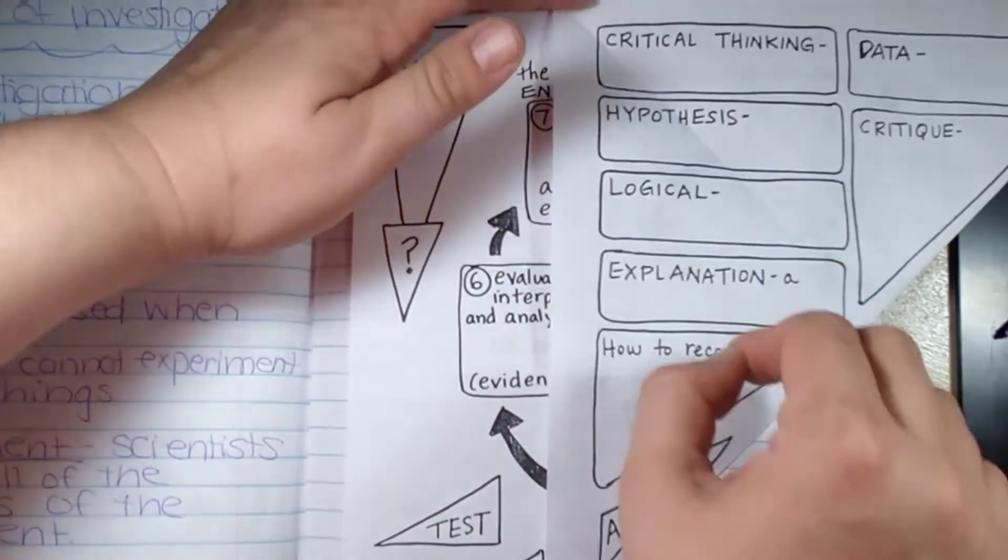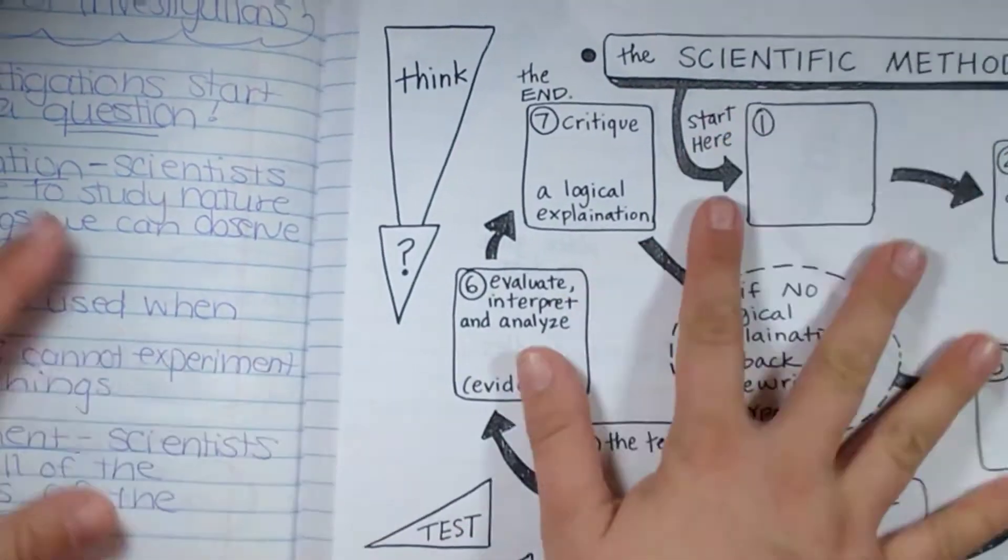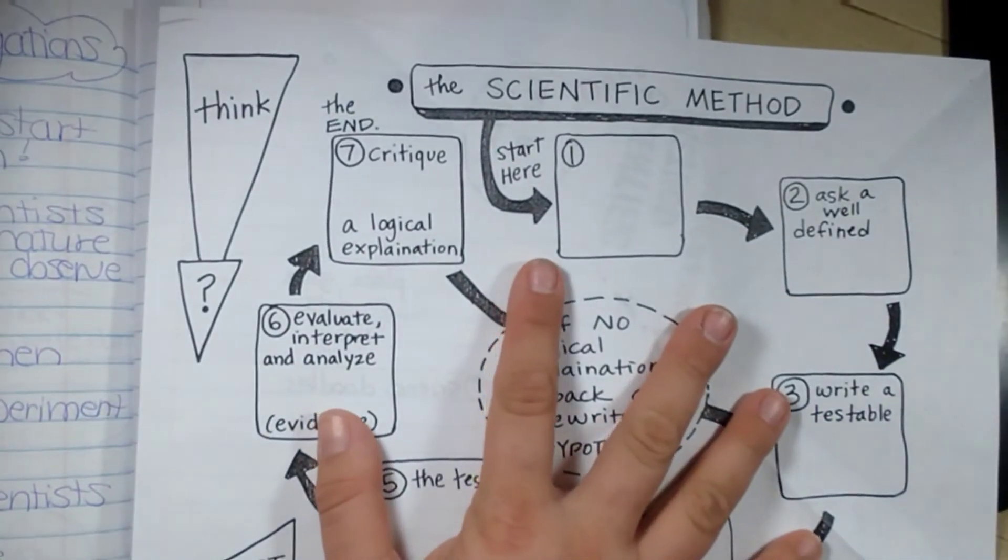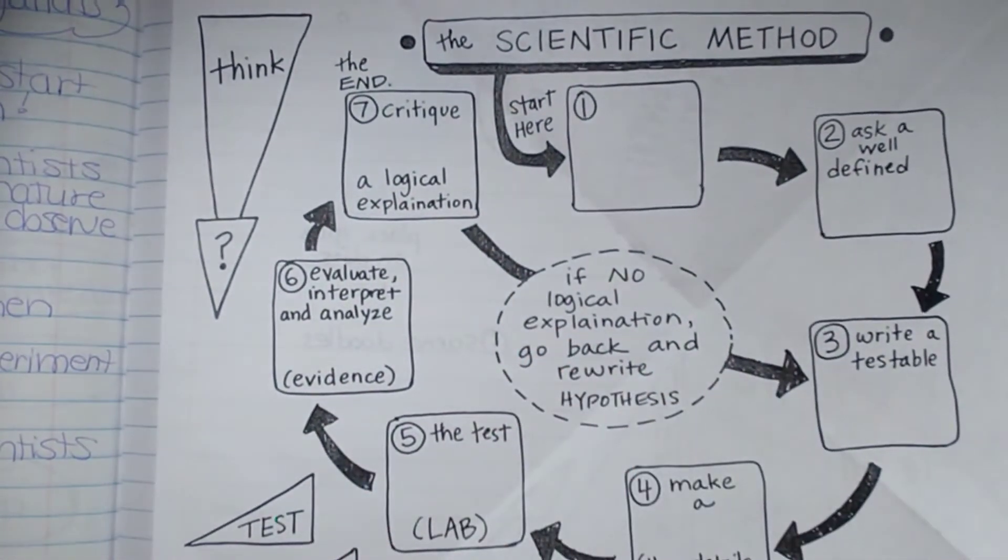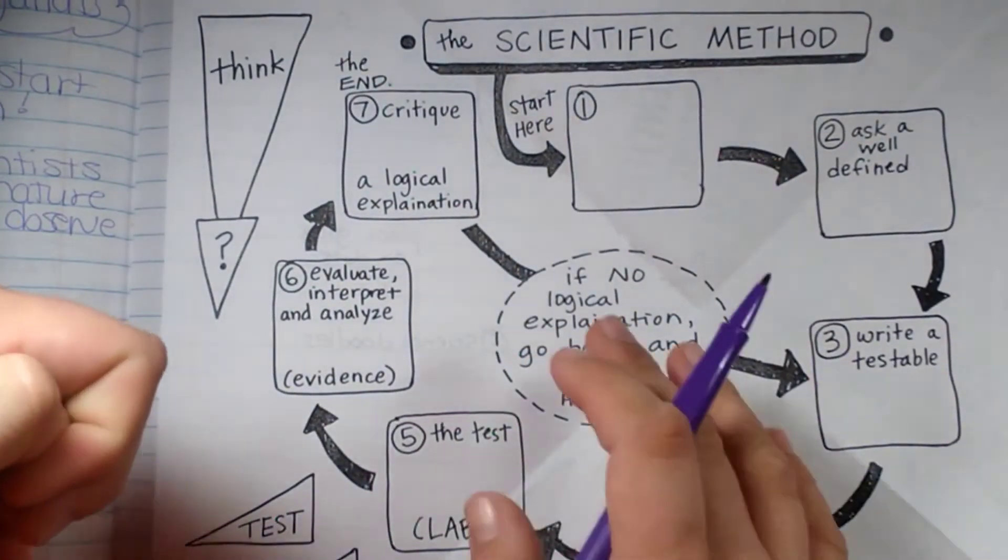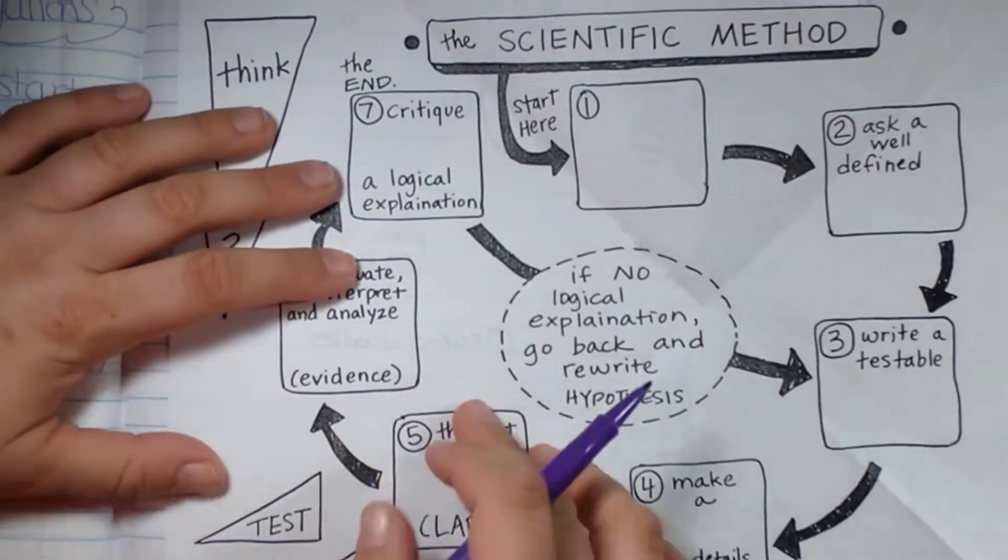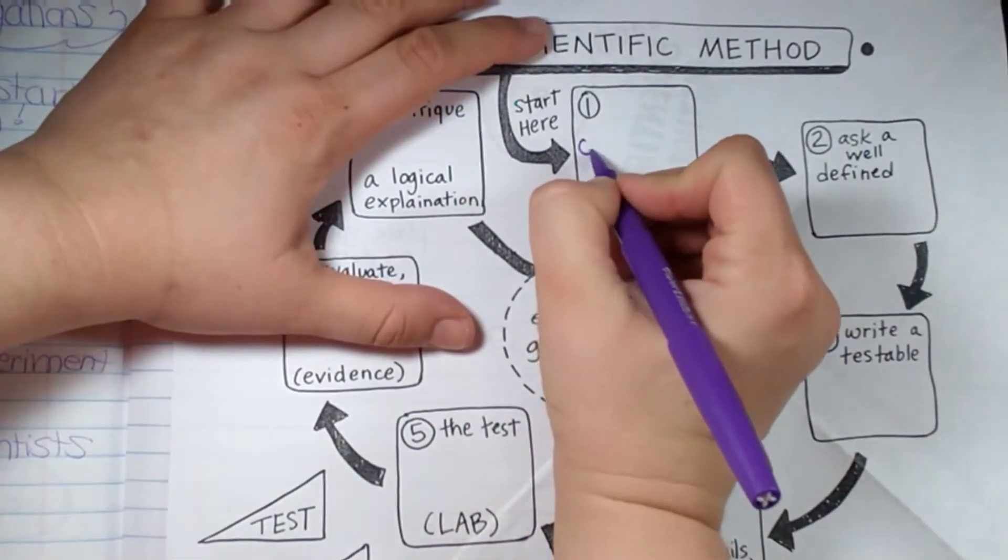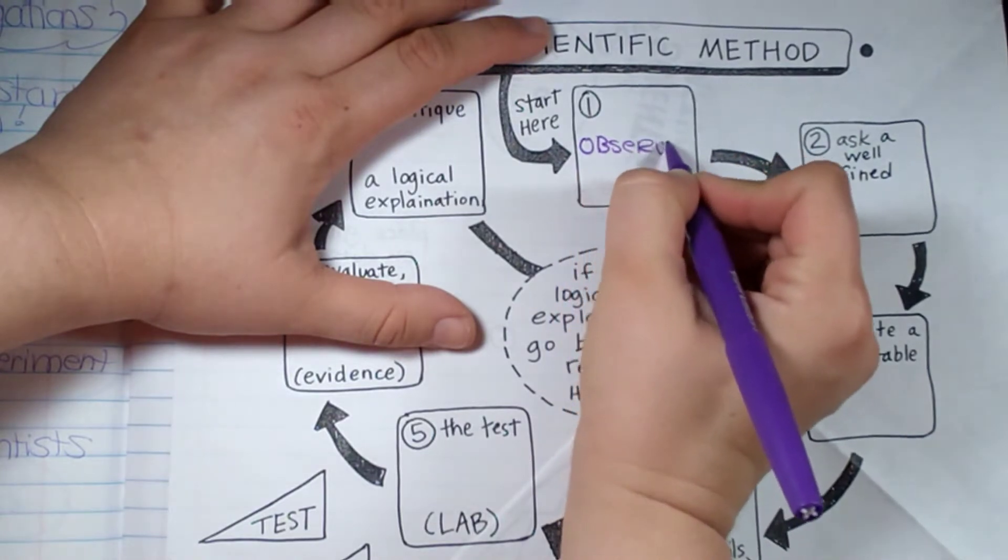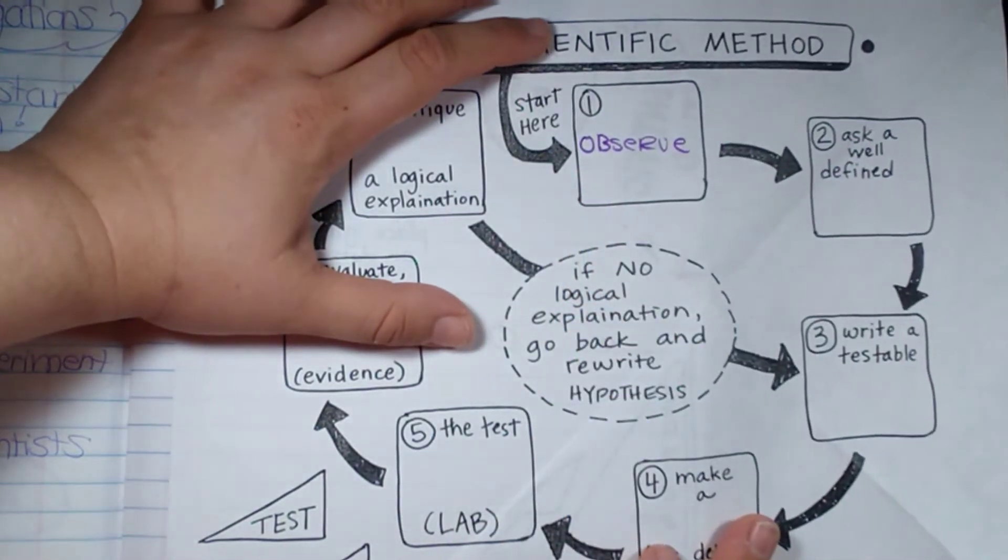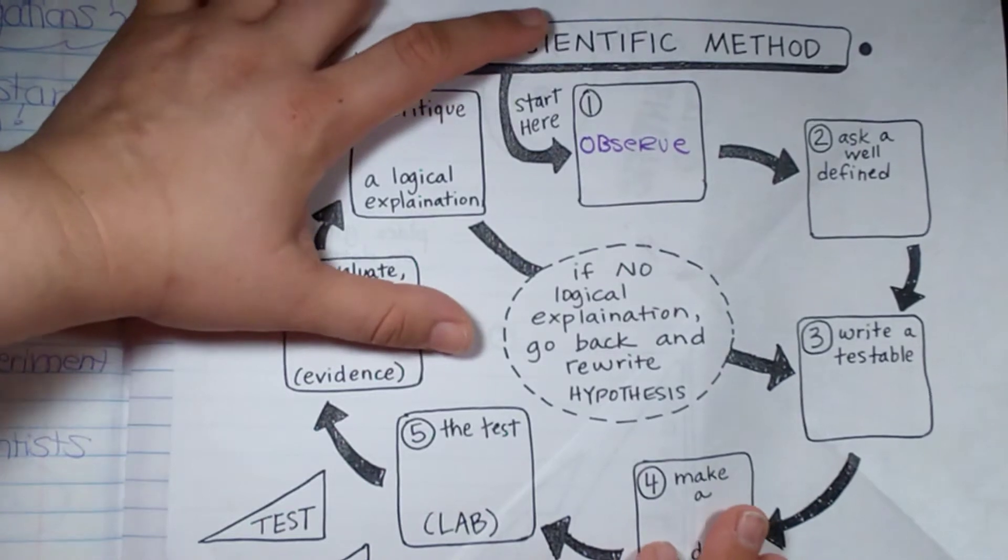I'm going to open this up and we're going to start at the first step. The scientific method is the process that scientists use in order to do an experiment, which is one of our investigations. The first step is to observe, to look around you and to make an observation.